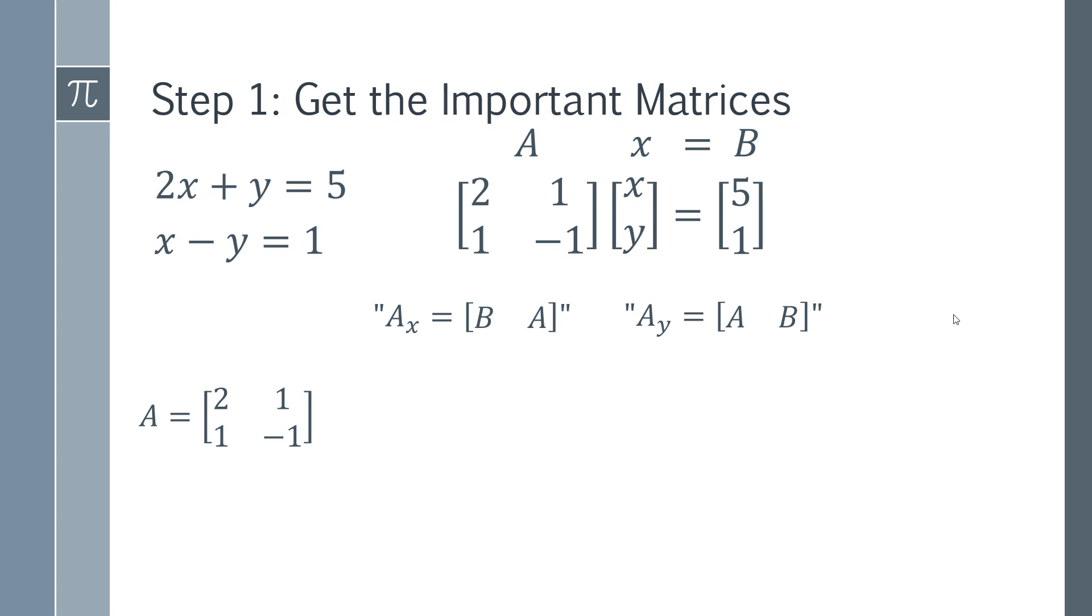We've already got A. Now we need to get AX. Using the cheat rule above, we can copy the 5, 1 into that position, and then we fill in the remaining parts of A. So we've got the second column of A - the 1 and minus 1.